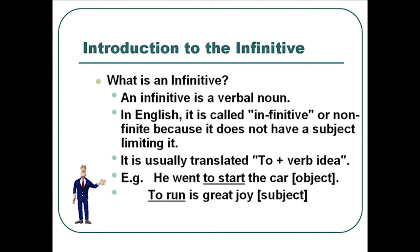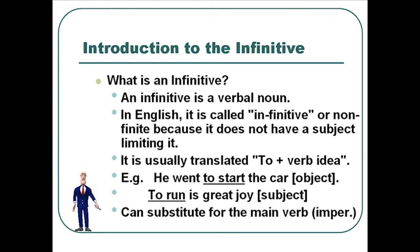'He went home' — home would be a noun. 'To start the car' is a noun substitute — in that case it's the object of the sentence. 'To run is great joy' — here 'to run' is the subject of the sentence, playing the role of 'music is great joy' or 'Greek is great joy.' So 'to run' is a noun substitute as the subject. In Greek, the infinitive can also substitute for the main verb in an imperatival sense, but largely for us to begin, it's simply 'to' plus the verb.